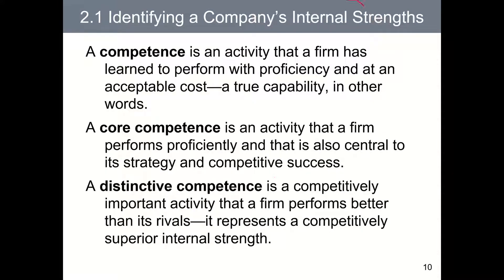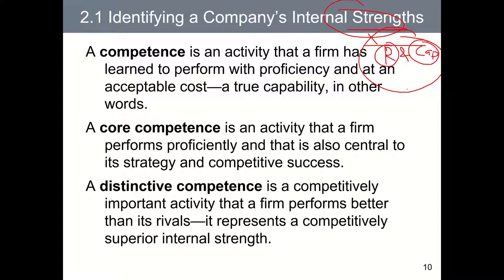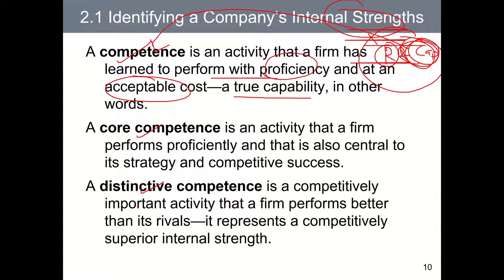To analyze the strengths of a company, we examine the resources and capabilities that a company possesses. From this pool, we identify those that qualify as competence, core competence, or distinctive competence. A capability qualifies as a competence — also known as a true capability — if a company can perform it proficiently and at acceptable cost. For example, in shipping, capabilities could include customer service, crew management, operations management, and bunker management. A competence qualifies as a core competence if it is central to a firm's strategy and competitive success.